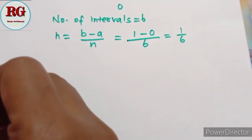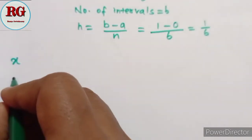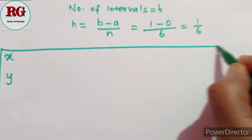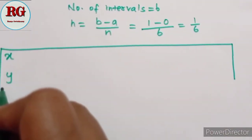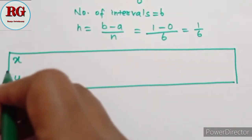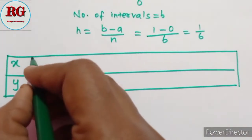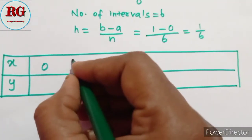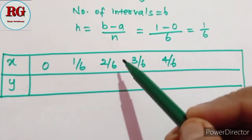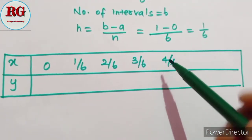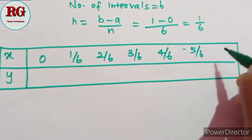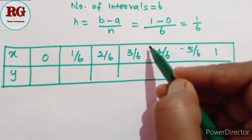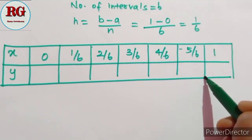Now we will set up a tabular column with x and y values. The x values are: 0, 1/6, 2/6, 3/6, 4/6, 5/6, and finally 1.